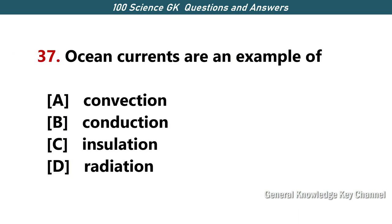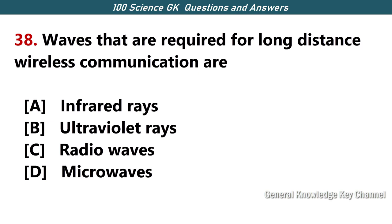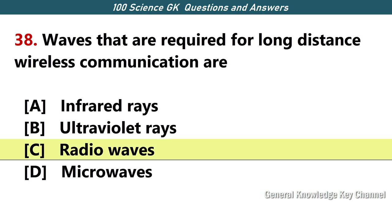Ocean currents are an example of — Answer A — convection. Waves that are required for long-distance wireless communication are — Answer C — radio waves.